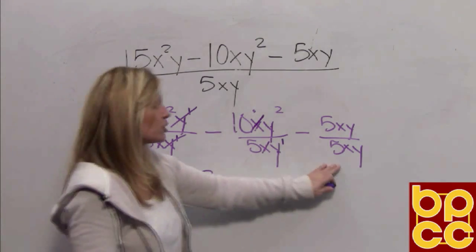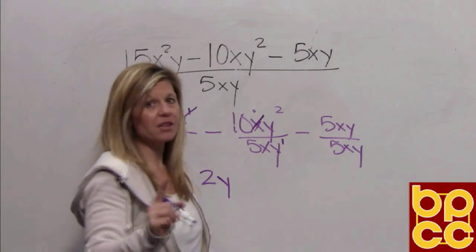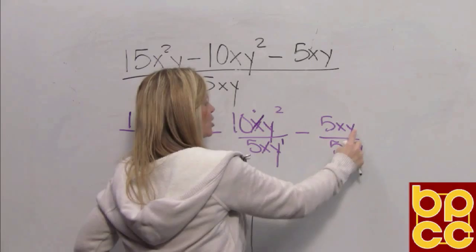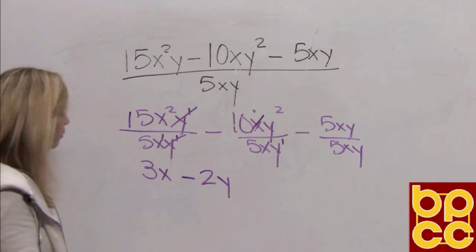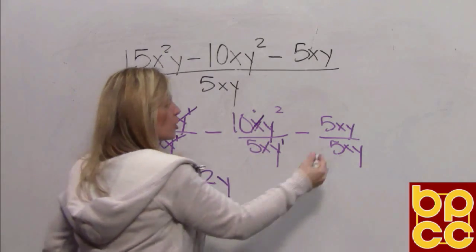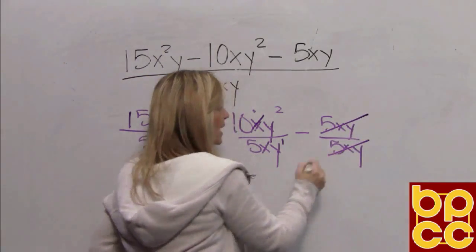But now we come to the third term. And this is where the problem is. We're dividing the exact same thing, 5xy divided by 5xy. And if you've seen previously, when we divide the same thing, it crosses out. So your gut reaction is to cross that out.